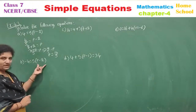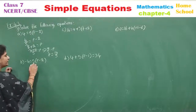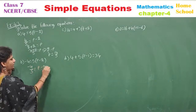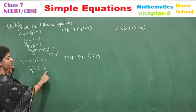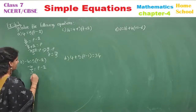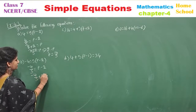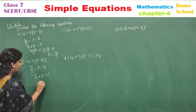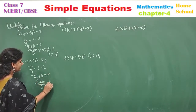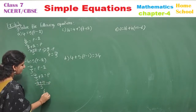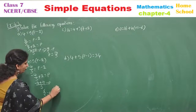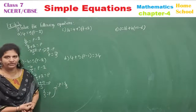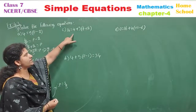The variable is p. 5 is a multiple; send it to the other side as a divisor. So minus 4 by 5 equals p minus 2. The minus 2 is extra — send it to the other side as plus 2. Do LCM of 5: minus 4 plus 10 gives 6, so p is equal to 6 by 5.